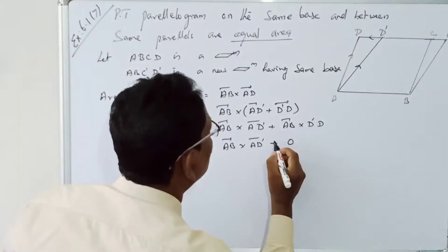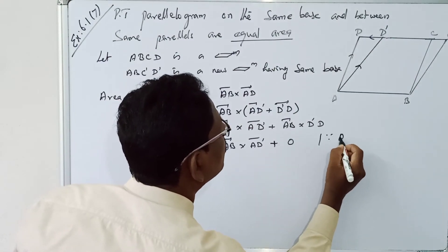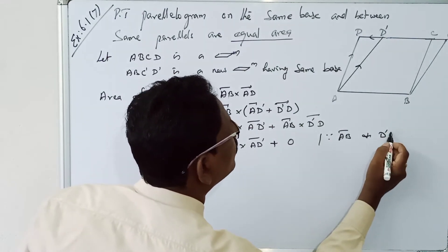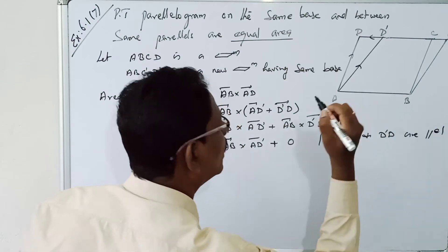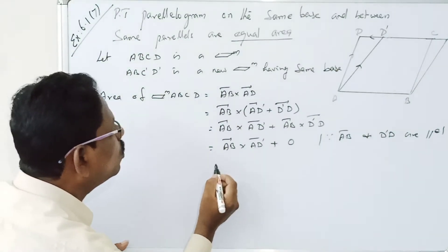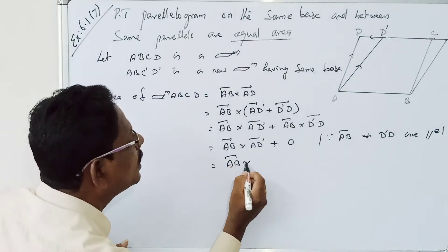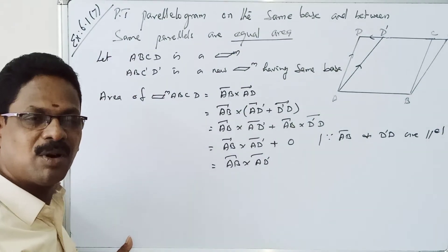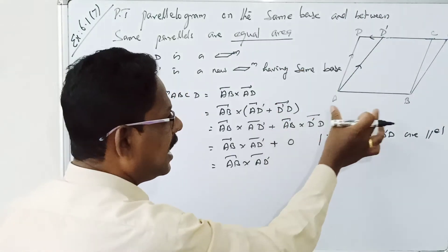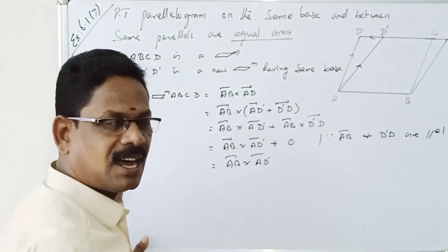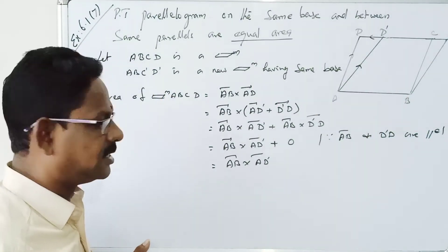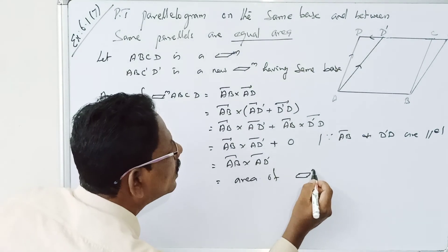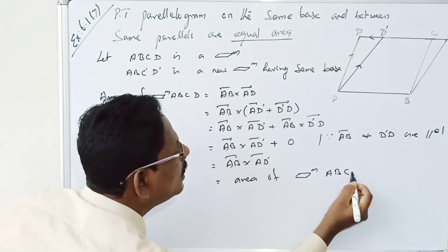That is equal to AB cross AD' plus zero — because if two vectors are parallel, then A cross B equals zero. Since AB and D'D are parallel, therefore AB cross D'D is equal to zero. So we have AB cross AD'.